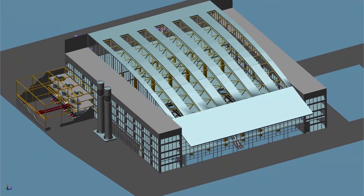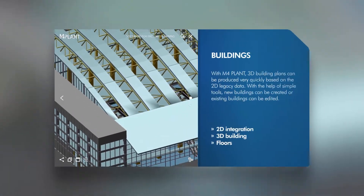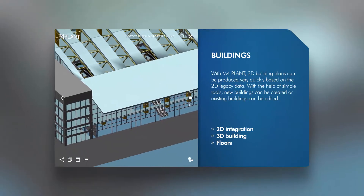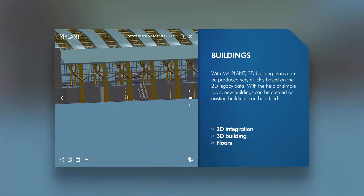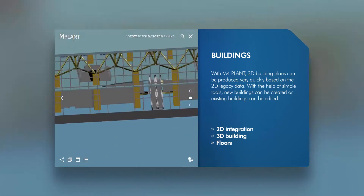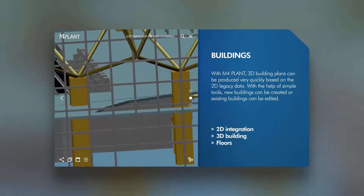M4Plant can be used to create 3D buildings very quickly, based on your 2D inventory data. Using simple tools, you can also design completely new buildings and edit existing ones.